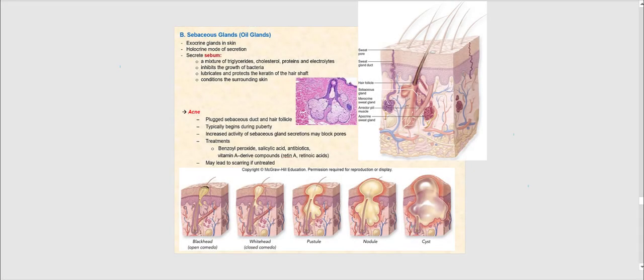Another accessory structure associated with the integumentary system are sebaceous glands, oil-producing glands. These are exocrine glands found in the skin. The holocrine mode of secretion is how the discharge of sebum occurs. Sebum is oil produced by the sebaceous glands, containing a mixture of triglycerides, cholesterol, proteins, and electrolytes. Sebum can inhibit the growth of certain bacteria, lubricates and protects the keratin of the hair shaft, and conditions the surrounding skin.